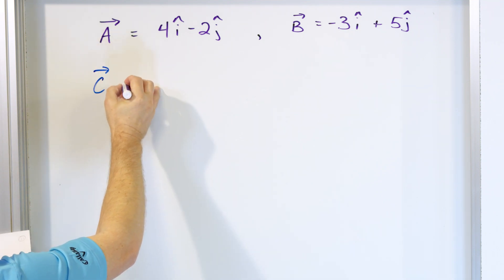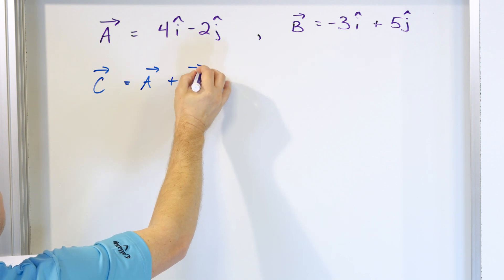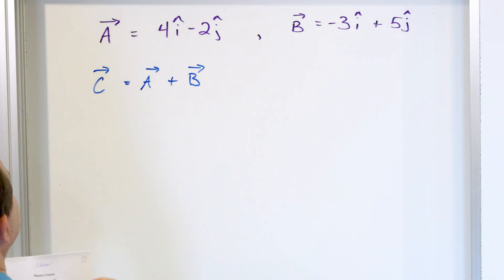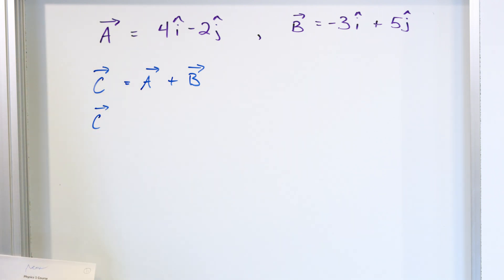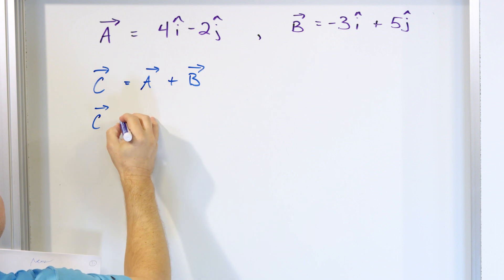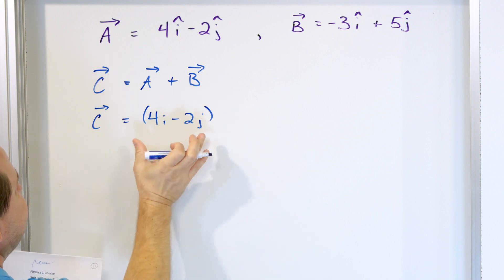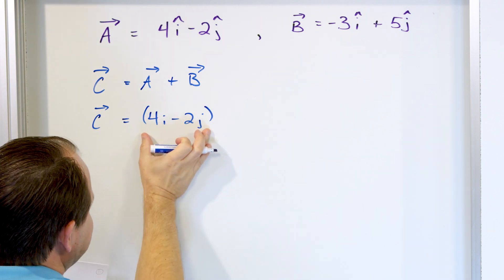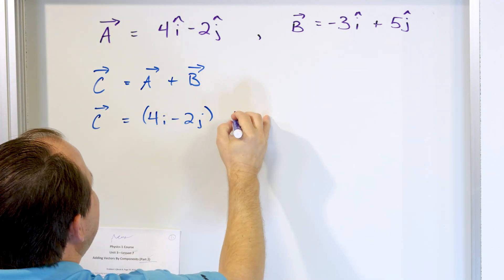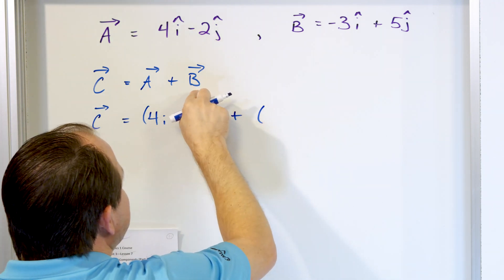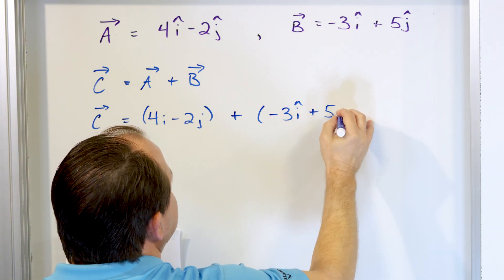Vector C is told in the problem statement to be equal to vector A plus vector B. Since we know what vectors A and B are, we add them together. Vector A is 4i minus 2j — I'll wrap that in parentheses just to group it — and we add to that vector B, which is negative 3i plus 5j.